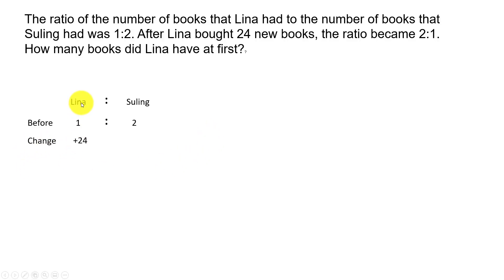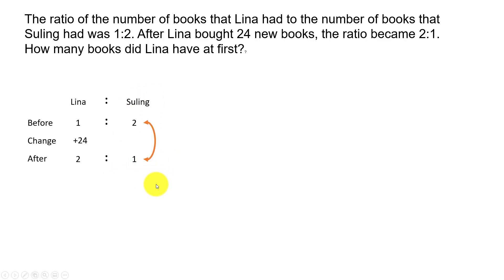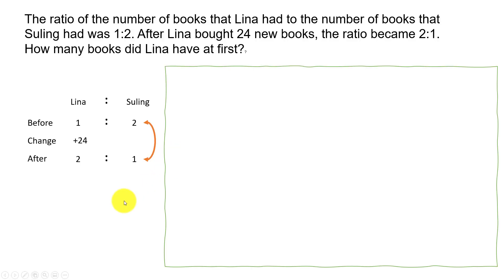Then what happened — after Lena bought 24 new books, when we look at the change, Lena has an increase of 24 books. For Su Ling, there is no change in the number of books; she neither bought, sold, nor lost any books. So the number of books with Su Ling remains the same, and the ratio became 2 is to 1. Although Su Ling is shown as two units before and one unit after, there is no actual change in the quantity.